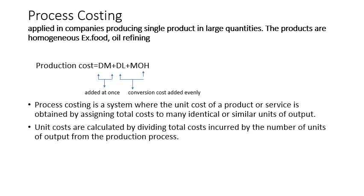Process Costing concentrates on the unit cost and how to compute it by dividing the total cost over the number of outputs.